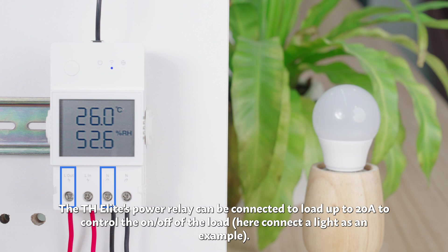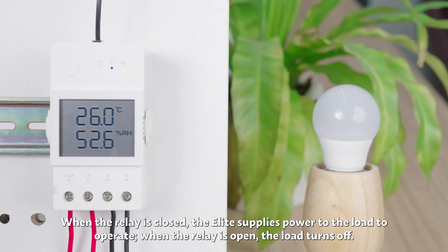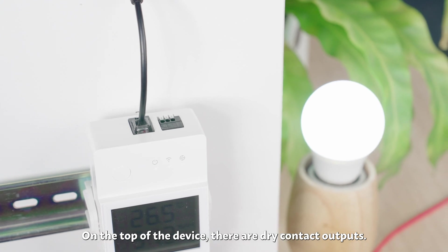Here, connect a light as an example. When the relay is closed, the Elite supplies power to the load to operate. When the relay is open, the load turns off. On the top of the device, there are dry contact outputs.